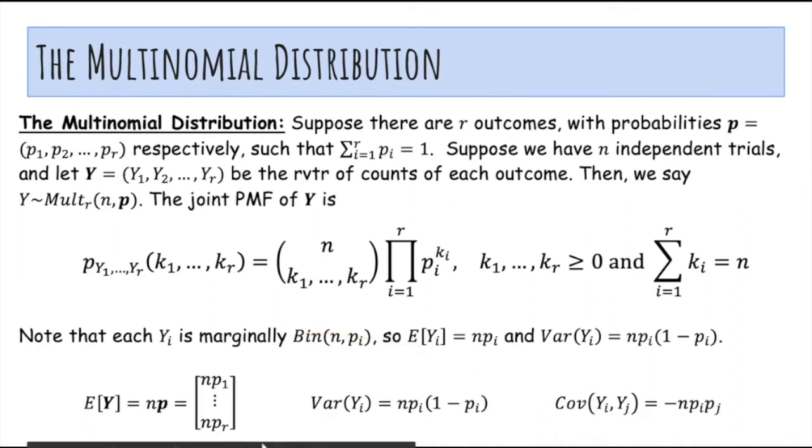So the expectation and variance of each Y_i is just the same as the binomial. And then expectation of the vector is like this and variance, and notice that the covariance is actually negative. And that makes sense because as Y_i increases, the number of times that outcome i occurs increases, then the number of times that outcome j occurs probably will decrease because outcome i and j cannot occur at the same time.